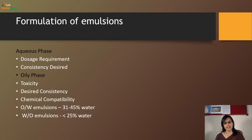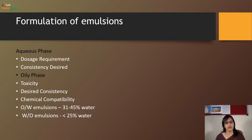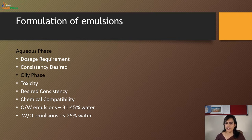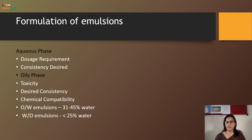We will start with the formulation of emulsions. As you all know, the formulation of emulsions involves an aqueous phase and an oil phase. For the aqueous phase, it decides the dose requirement and the desired consistency. For the oil phase, before selecting it, we need to know the toxicity, the desired consistency, and chemical compatibility. Generally, for oil-in-water type emulsions, the water percentage ranges from 31 to 45%, and for water-in-oil emulsions, it is less than 25% of the total volume.